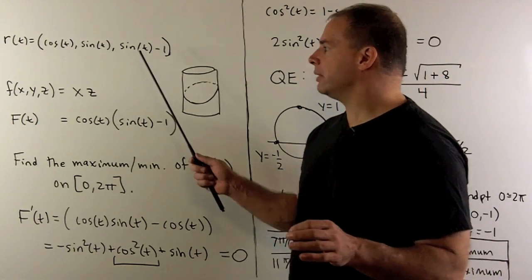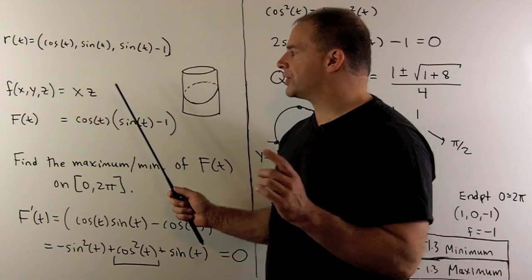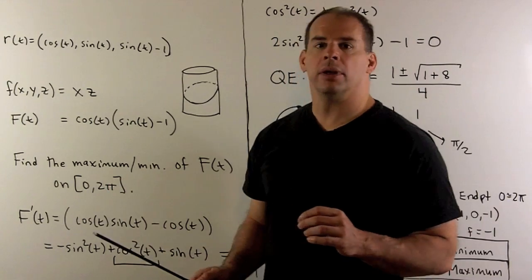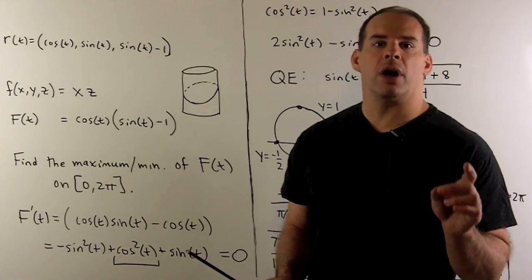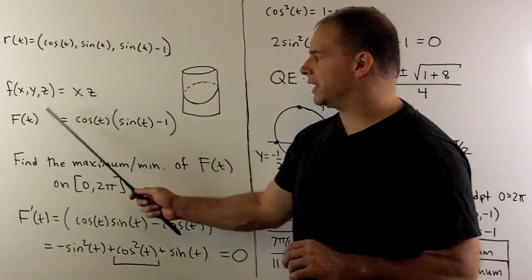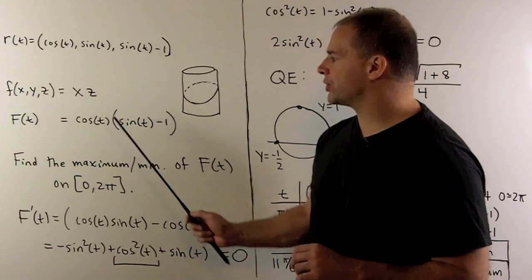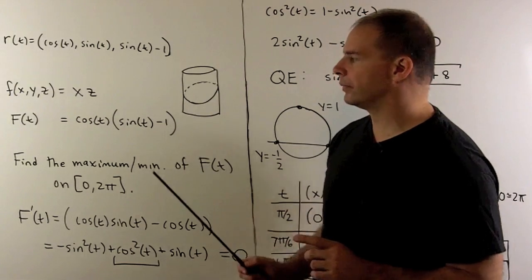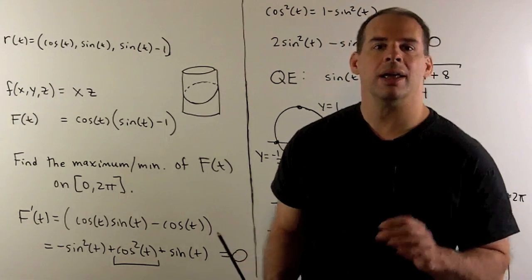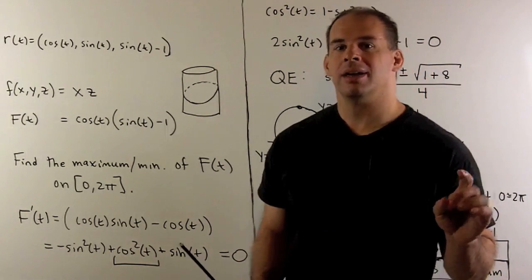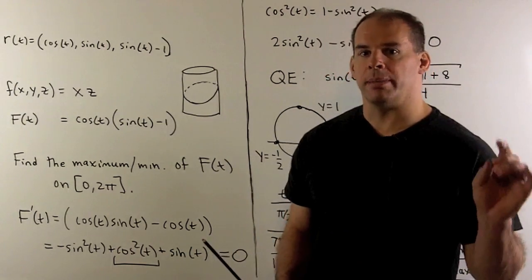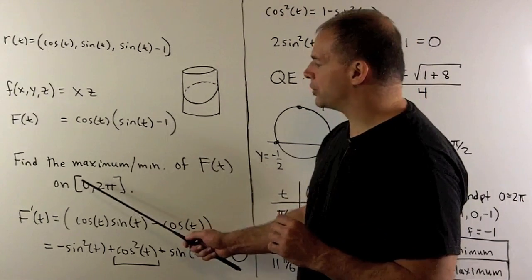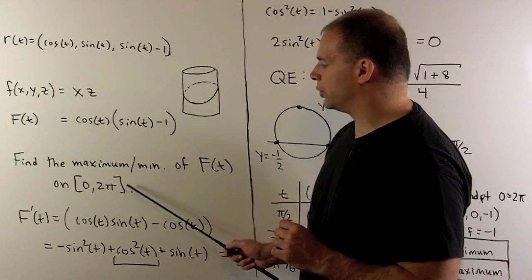With our parametrization, we substitute in for x and z in little f. We get a new function of one variable: F(t) equals cosine of t times (sine of t minus 1). Now we're trying to find the maximum and minimum of capital F of t on the closed interval from 0 to 2π.